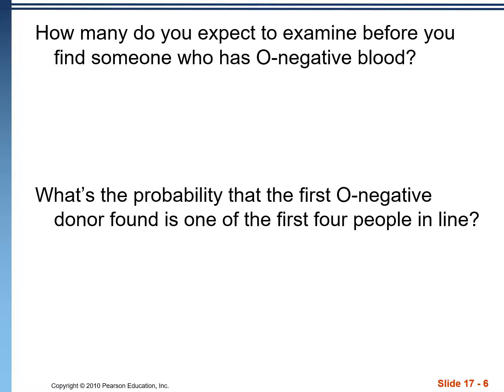In this problem, we have people standing in line for a blood drive. We know that 6% of people have O negative blood. The first question asks how many people we expect to examine before finding the first person with O negative blood. This is geometric — a waiting time problem. The expected value is 1 over P: 1 divided by 0.06 gives us 16.67. So on average we'd expect to go through about 16.67 people before finding one with that blood type.